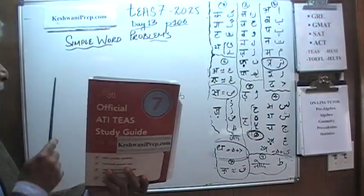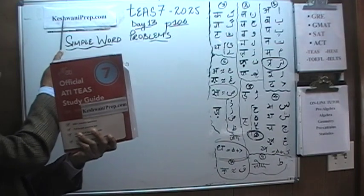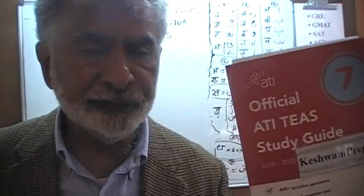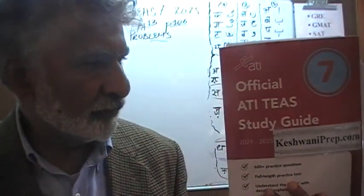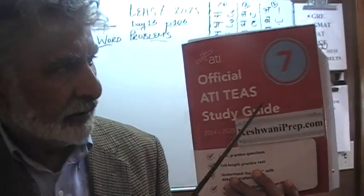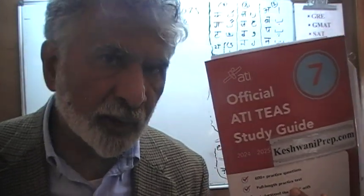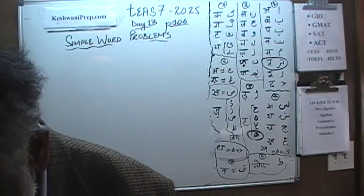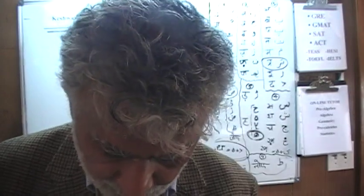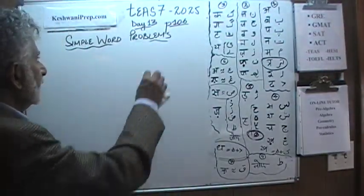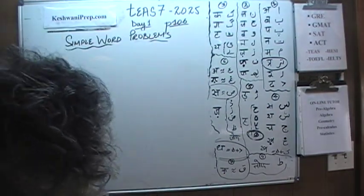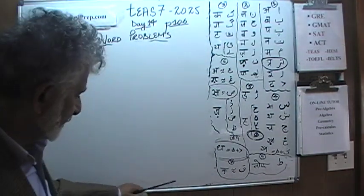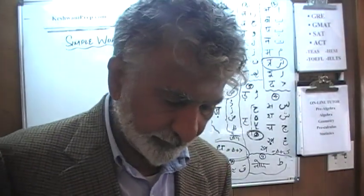Hello, my name is Keshwani, K-E-S-H-W-A-N-I. We are here because we want to prepare for TEAS. We have been solving TEAS math problems out of this book, the official TEAS study guide version 7, 2025. If you do not own this book already, purchase one immediately. Always make sure this book is in front of you when you and I are working together. Today is our lesson number 14. We are on page number 106 where there are five practice problems. Today we will do problem number 3, 4, and 5. So let's get going.